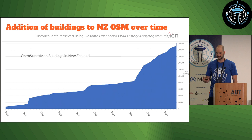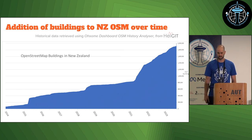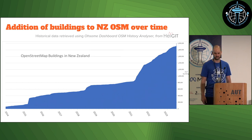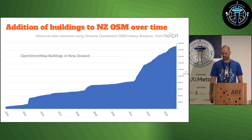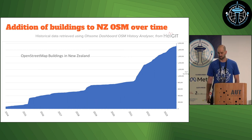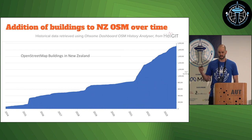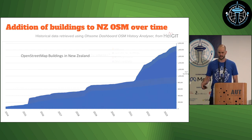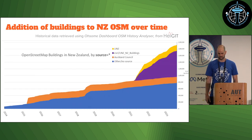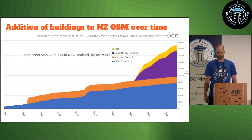Let's look at some stats of buildings in NZ OSM. Starting in 2014, there were less than 100,000 buildings. Today we're reaching 2 million. From that graph you can see it hasn't been smooth growth — there have been big jumps. If we break those down by the source tag on the buildings, you can spot some imports.